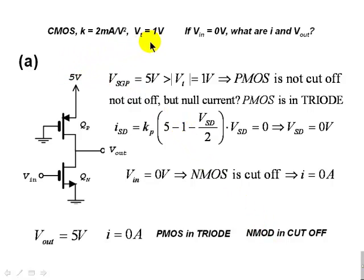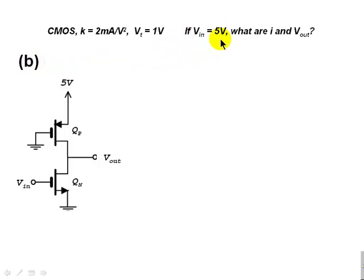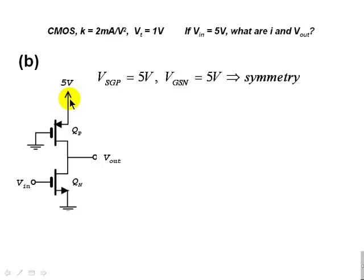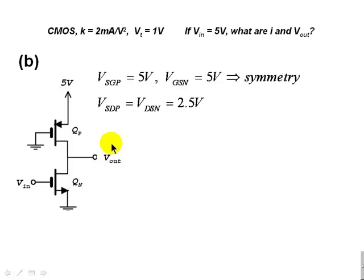For Part B, the input is 5 volts at the gate of the N transistor. Applying 5 volts at the gate, with 5 volts at the supply, produces a symmetrical situation between both transistors. The P transistor has its source higher than the gate by 5 volts; the N transistor has its source lower than the gate by 5 volts — symmetry. That means the source-drain voltages are equal, and they must each be half the total voltage: 2.5 volts. So Vout = 2.5V.